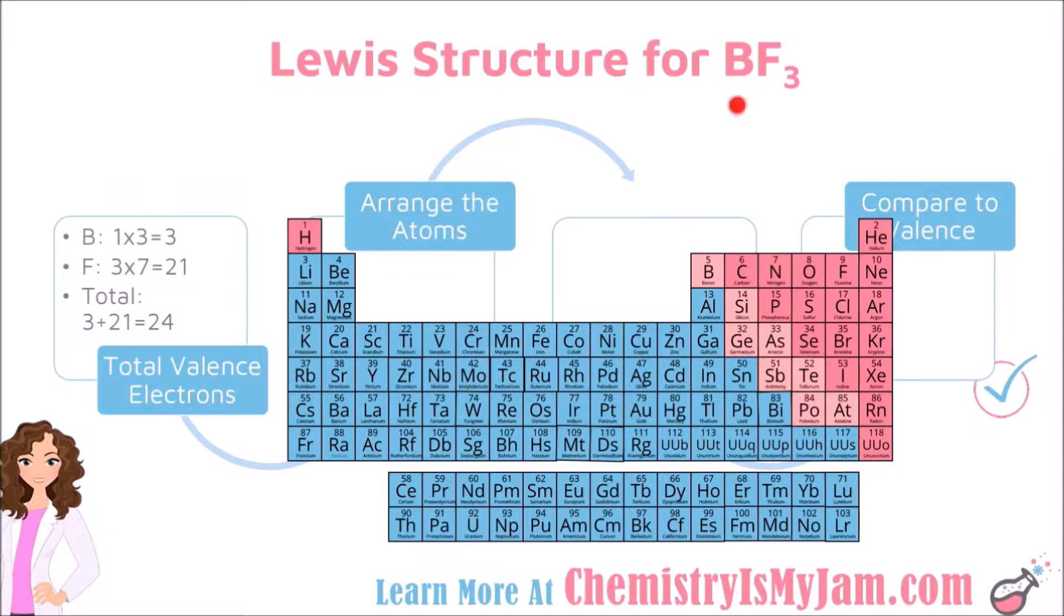In this structure, we have 1 boron. Boron is here with 3 valence electrons. 1 times 3 is 3. This structure has 3 fluorines. Fluorine is here with 7 valence electrons. 3 times 7 is 21. Add those together. When I am done with this structure, I should have 24 valence electrons drawn.